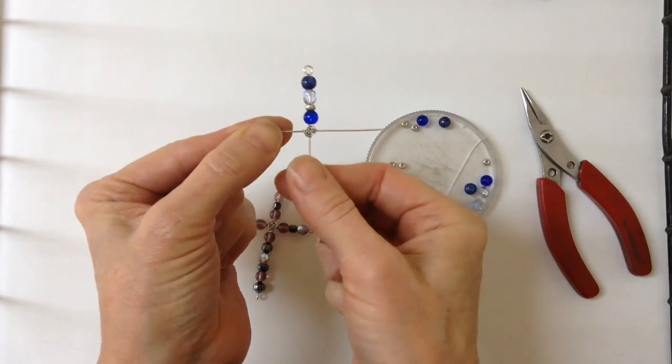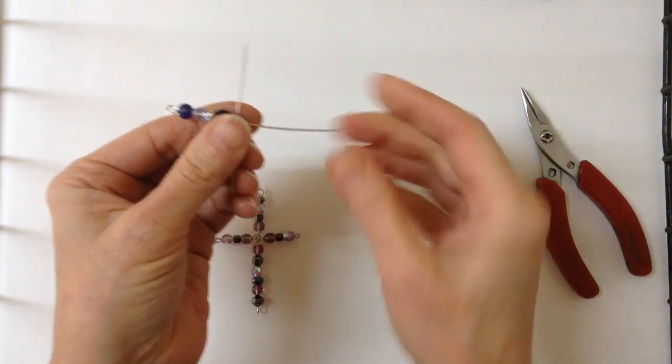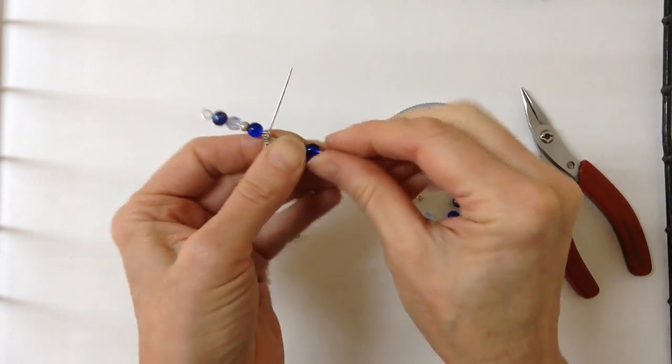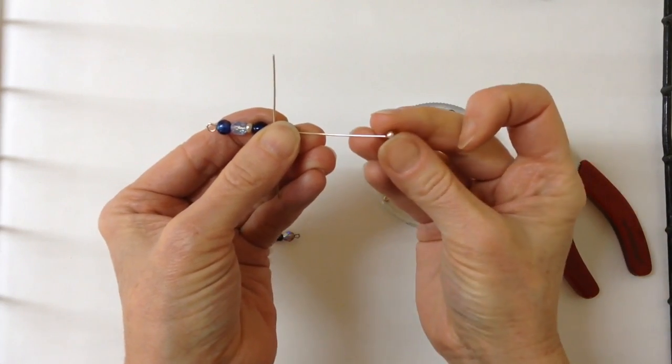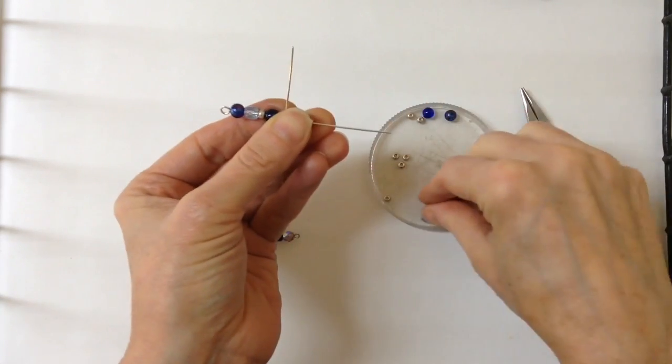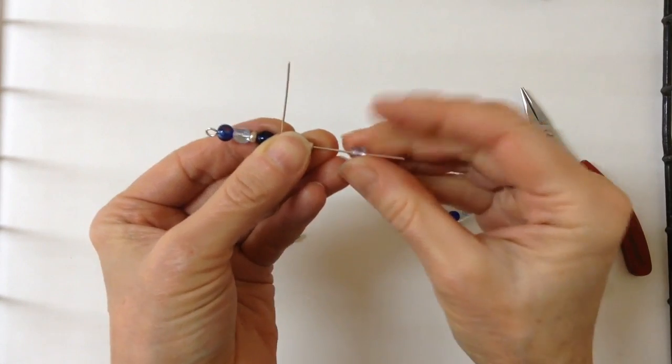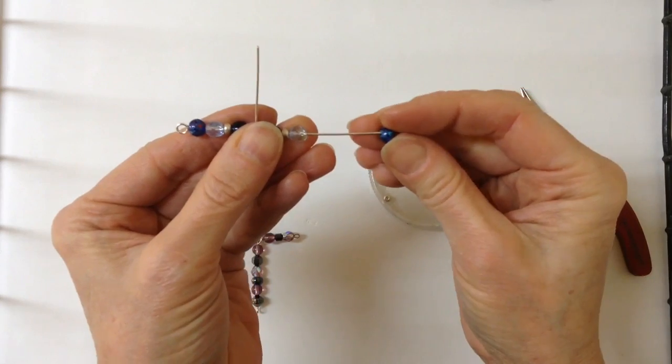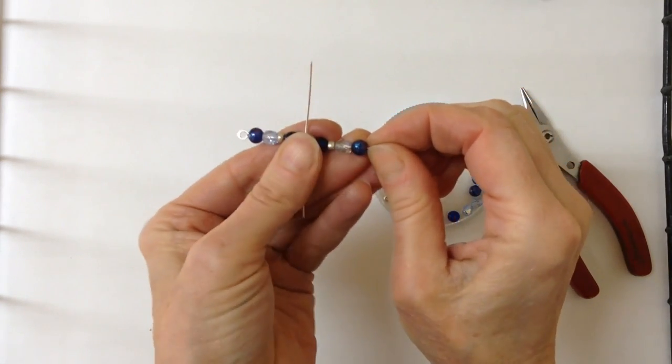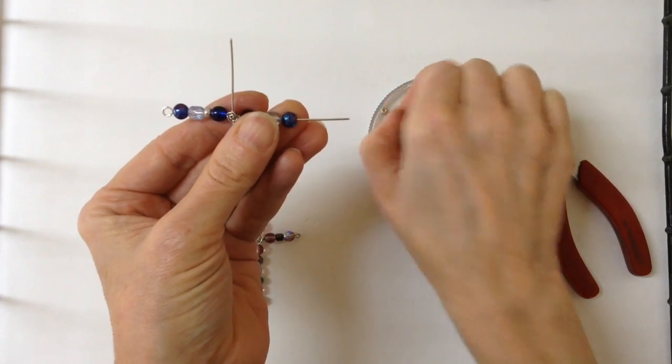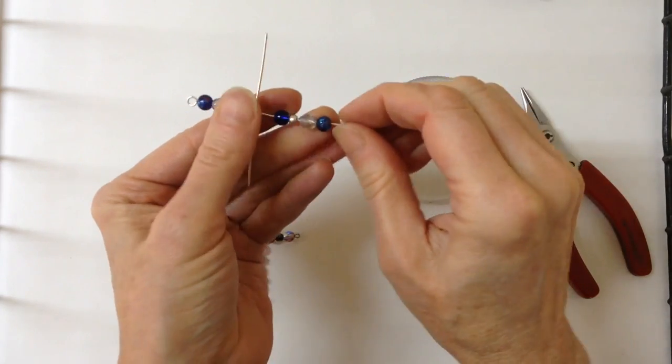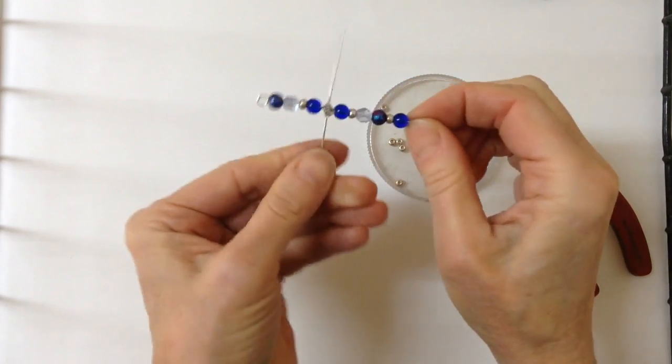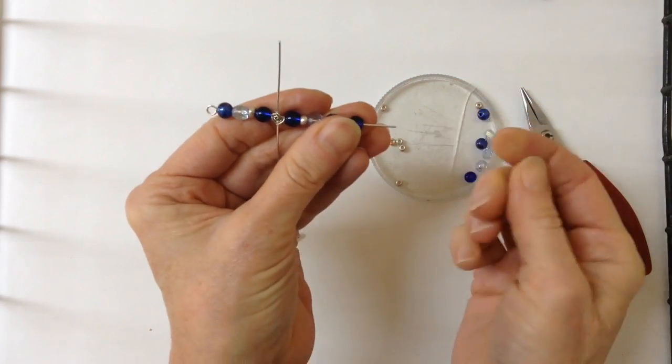Once we have those ones, we're going to do the ones at the bottom. You can follow the same pattern if you like. We'll do about the same pattern but we'll do maybe a couple of extra beads to make it a little bit longer, just because sometimes the bottom part of the cross is a little bit longer. We'll add another little bead and another clear bead at the bottom just to make it a wee bit longer.